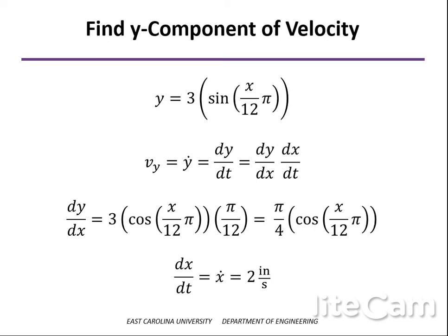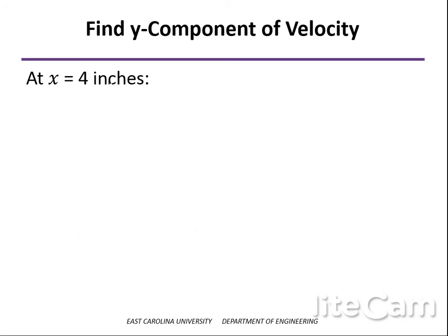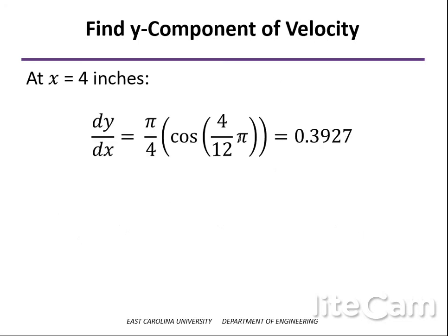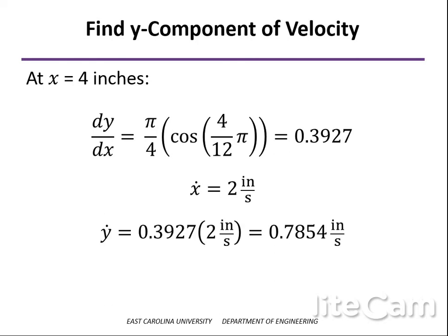The second part, dx/dt, is just the speed in the x direction: 2 inches per second. At x equals 4 inches, the derivative of y with respect to x evaluates to 0.3927. Multiplying those two together, we get the velocity in the y direction: 0.7854 inches per second. It is positive, so as the visualization showed, the particle is moving upward in the y direction at x equals 4 inches.